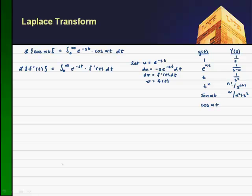Now let's write this transform as u times v. I'll get f of t times e to the minus st, evaluated from zero to infinity, minus the integral from zero to infinity of v du. So I'll have f of t, and then du gives me minus s e to the minus st times my function f of t dt.